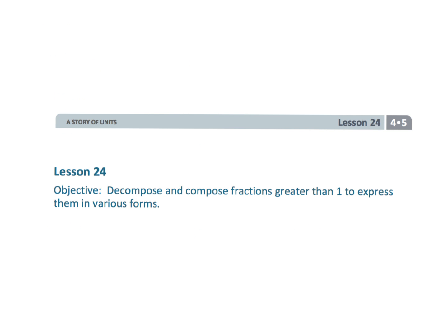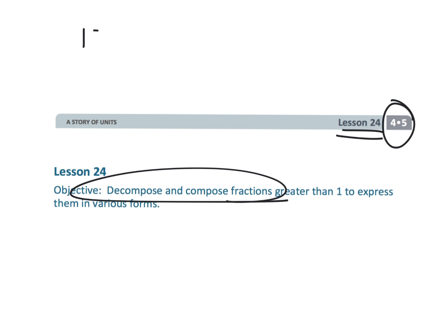And that wraps up this lesson — fourth grade, module five, lesson twenty-four. It's going to make parents and teachers happy, because basically we are turning improper fractions — which now we're just calling fractions — and turning them into mixed numbers, which are still called mixed numbers. For example, thirteen-fourths is equal to three and one-fourth.